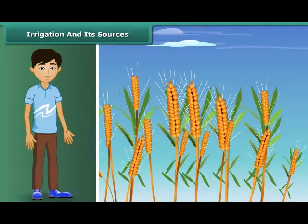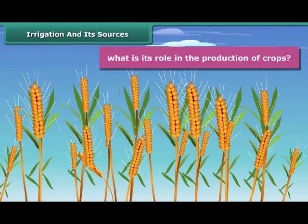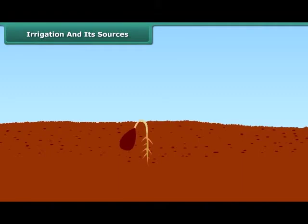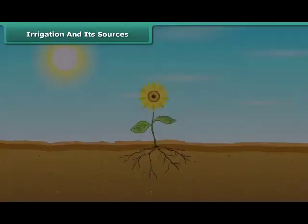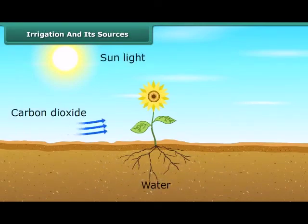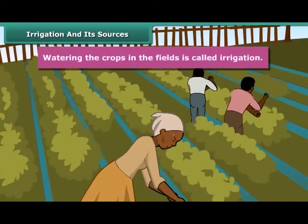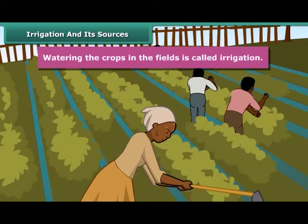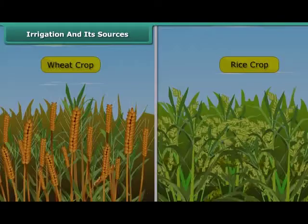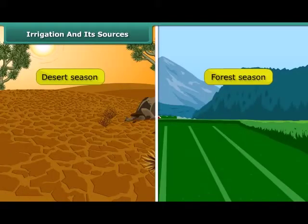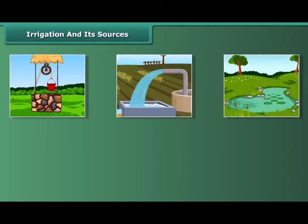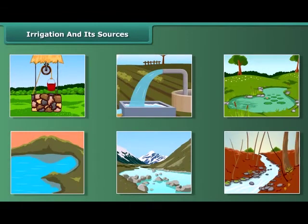Water is very essential for all living beings, but what is its role in the production of crops? Water is essential for crops because germination of seeds cannot take place under dry conditions. Water is absorbed by plant roots and along with it, minerals and fertilizers are also absorbed. Hence, watering the crops in the fields is called irrigation. The time and frequency of irrigation varies from soil to soil, crop to crop and season to season. The main sources of water for irrigation are wells, tube wells, ponds, lakes, rivers, dams and canals.